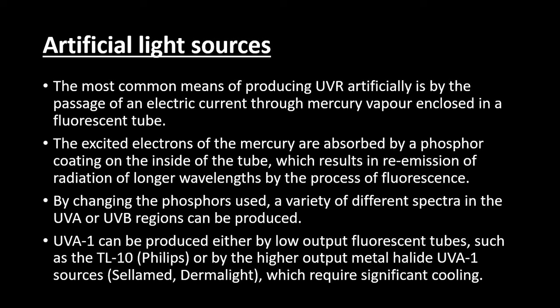These fluorescent tube lights are coated with phosphor, and excited electrons of mercury — excited by electric current — are absorbed by the phosphor coating and emit radiation. This is the mechanism of production of ultraviolet light. By changing this phosphor, a variety of different spectra of UVA and UVB light are emitted. UVA-1 is produced either by low output fluorescent tubes such as TL10 by Philips, or high output metal halide UVA-1 sources which require cooling.